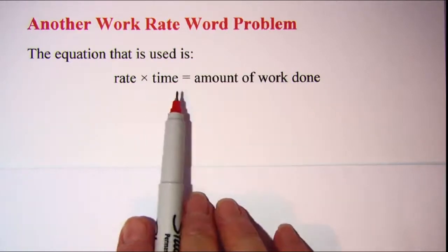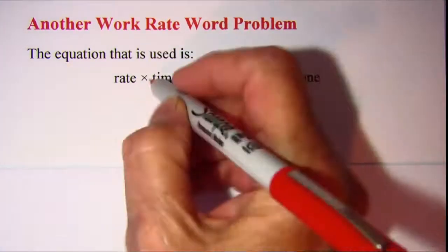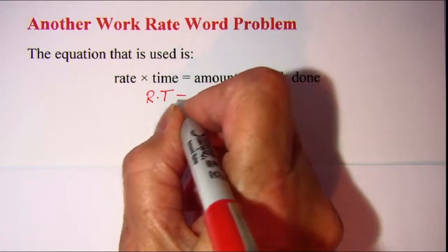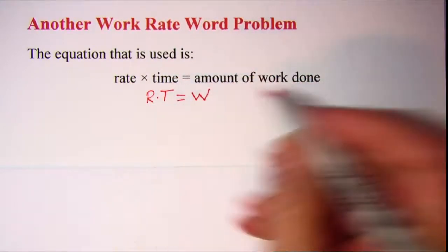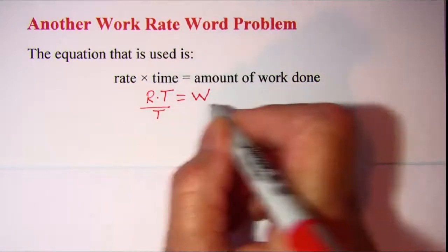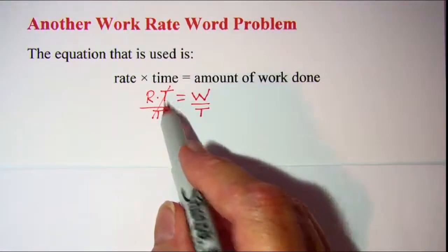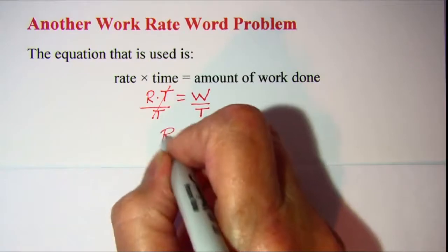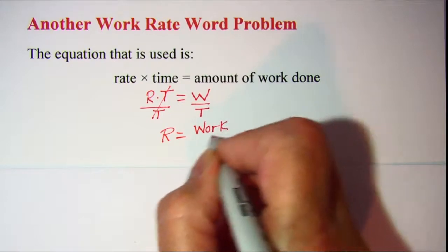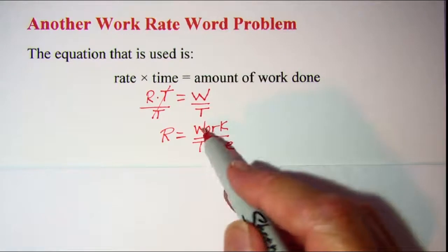Now we may also need to talk about the rate at which the job is being done. So if I take this equation, rate times time equal amount of work done, and solve this equation for r, I need to divide both sides by t. The t's will cancel out on the left side, and I have rate is equal to the amount of work done over a certain period of time, or w over t.